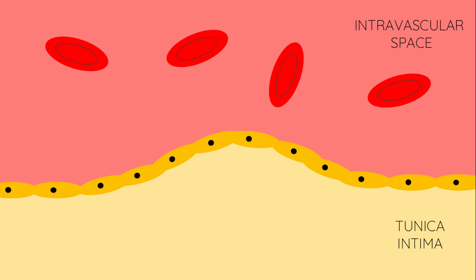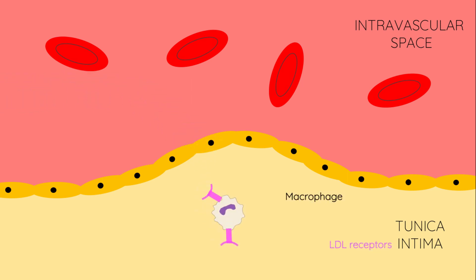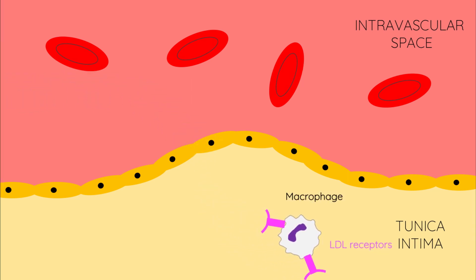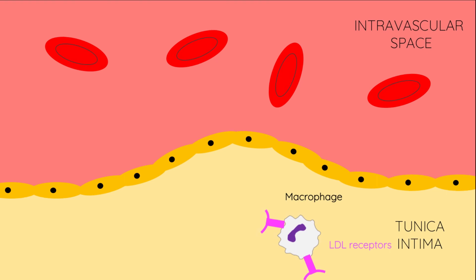Cholesterol is strongly implicated in the disease process of atherosclerosis. Atherosclerosis occurs when there is endothelial damage and this leads to the infiltration of macrophages into the tunica intima of arterial blood vessels. Circulating cholesterol which is being transported via low density lipoproteins enters the tunica intima and is endocytosed by the macrophages via LDL receptors known as scavenger receptors on the macrophage.